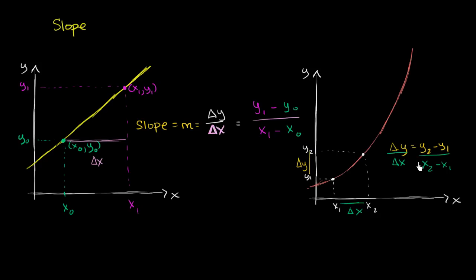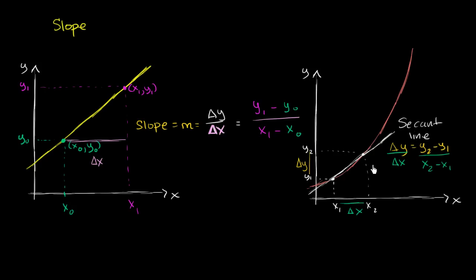So we were able to figure out the average rate of change of y with respect to x over this interval. But what have we also figured out? We figured out the slope of the line that connects these two points. And what do we call a line that intersects a curve in exactly two places? We call that a secant line. So the big idea is: the average rate of change of a curve over an interval is the same exact thing as the slope of the secant line.